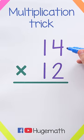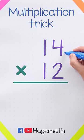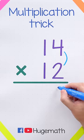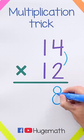In this example, we have 14 times 12. First, we're gonna multiply the digits in the ones place. 4 times 2 equals 8. I am going to put that 8 over here.